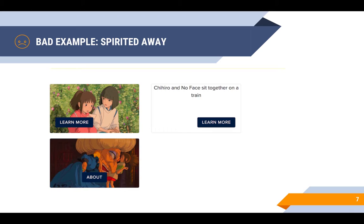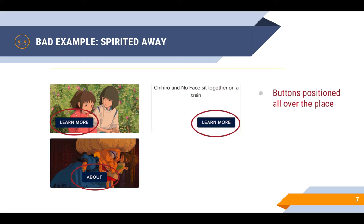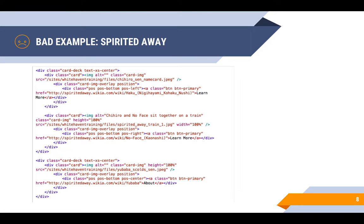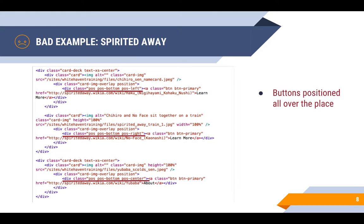Another issue with this card deck is the alignment. The buttons are all aligned to different places on the cards, and having two cards on one line and a third below is a design issue. These problems will both affect user experience and make the web page look bad. Both can be fixed by looking at the HTML. As you can see, underlined in red, each code for the position of the buttons is different. In the resource section below this video, you can find documentation on the correct code for each button position.